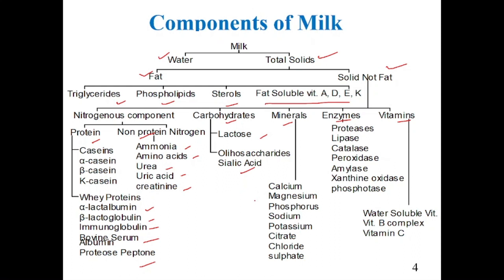Minerals in milk include calcium, magnesium, phosphorus, sodium, potassium, citrate, chloride, sulfate, etc. Enzymes present include proteases, lipases, catalase, oxidase, amylase, xanthine oxidase, and phosphatase. Both water-soluble vitamins (B complex) and fat-soluble vitamins (A, D, E, K) are present in milk.